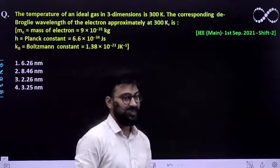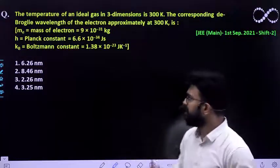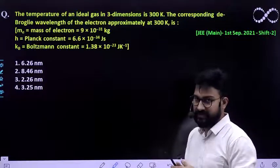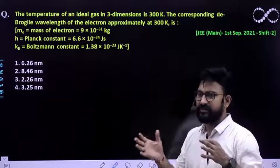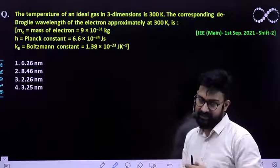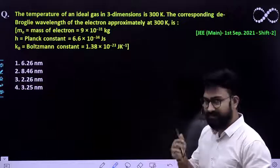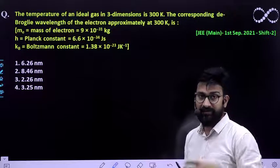So electron is within, as you can see, you can visualize it as if the electron is within some kind of container, big container, whose temperature is 300 Kelvin. So obviously it will vibrate and it will produce its own wavelengths.